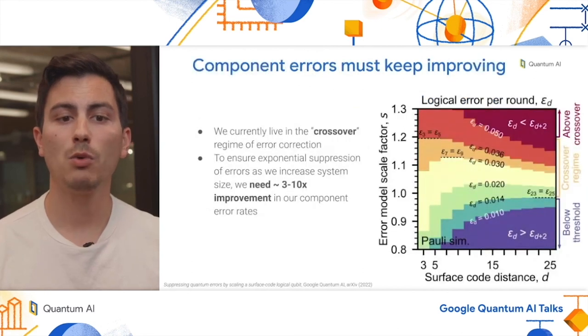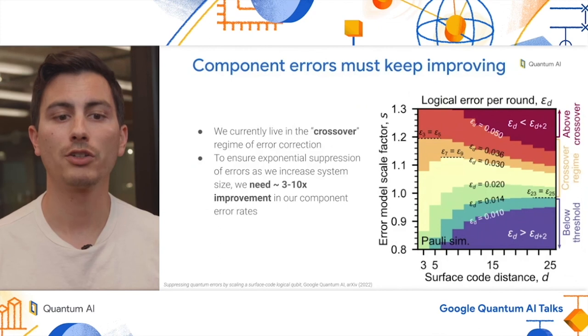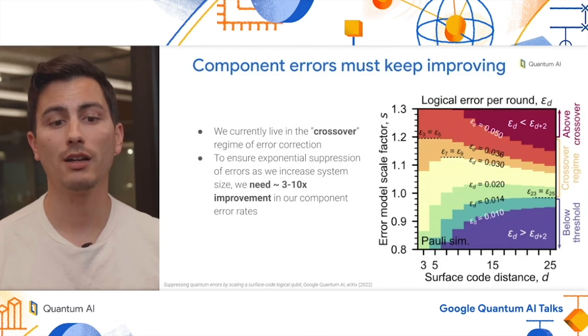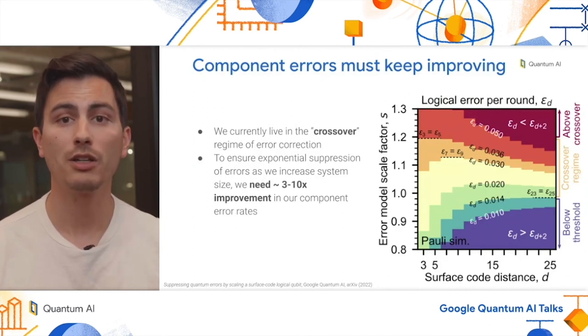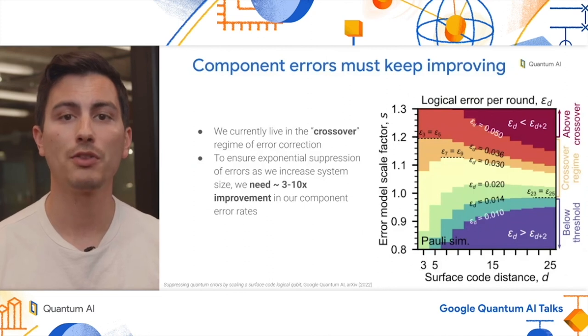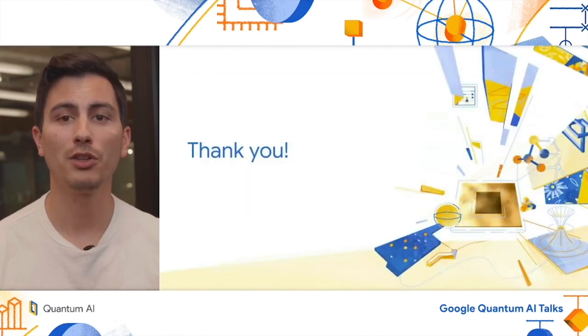With my remaining time, I'd like to walk you through what we have to do to achieve fault tolerant error correction. We currently live in the crossover regime of quantum error correction. What does that mean? Well, initially, as we scale up our system size, we'll see a suppression of the logical error rate. However, that only lasts up to a certain point, at which point logical errors will become more frequent. So to ensure that we get an exponential suppression of errors, as we increase the system size, we need to improve our component error rates. And in particular, we need to improve them by about three to 10x. However, we believe that with hardware upgrades, improved calibration, and improved system optimization, we can achieve this goal. And I'd like to thank you for your time and enjoy the rest of QSS.